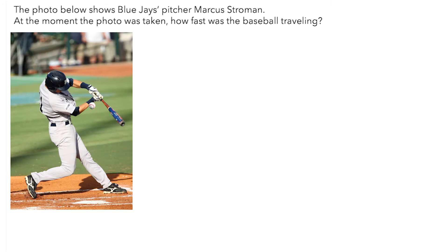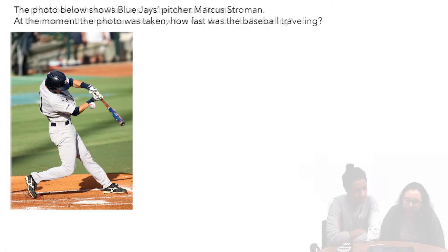In this video, you will see Julian and Alyssa look at a photo of the Blue Jays pitcher swinging at a baseball. They'll try to approximate the speed of the baseball at the moment the photo was taken. As they work, consider the understandings they express and determine if their reasoning is valid.